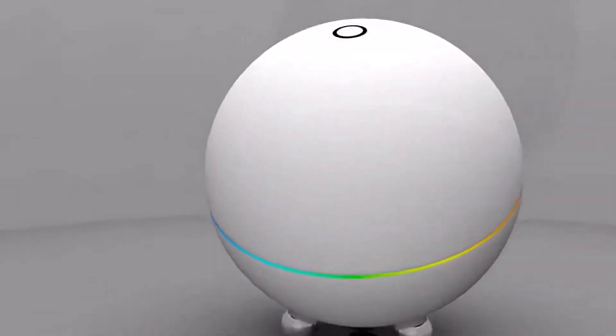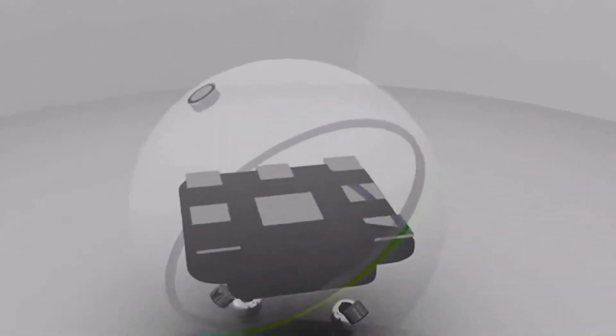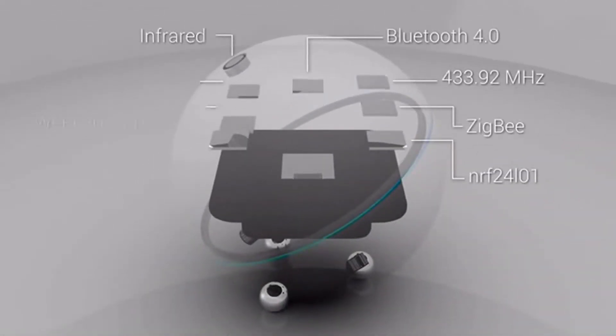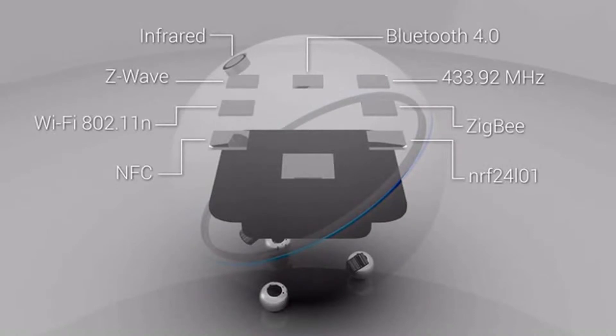Homey is built to work with virtually every product. To achieve this, the orb contains seven wireless modules and a very powerful infrared LED, so all the hardware to communicate is already on board. We use state-of-the-art speech recognition enhanced with artificial intelligence from university research to make it a fun and seamless experience to interact with Homey.